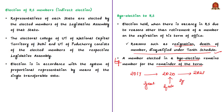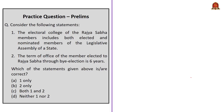The question has two statements. Statement 1 — the electoral college of Rajya Sabha includes both elected and nominated members of the legislative assembly of a state — is incorrect, since nominated members of the assembly are not included; only elected MLAs can vote for Rajya Sabha members. Statement 2 — the term of office of a member elected through by-election is six years — is also incorrect, since such a member serves only for the remainder period, not a full six-year term. The correct answer is option D, neither one nor two.